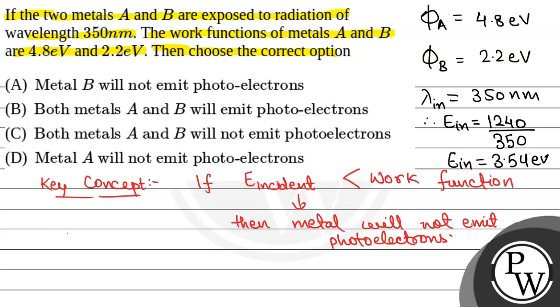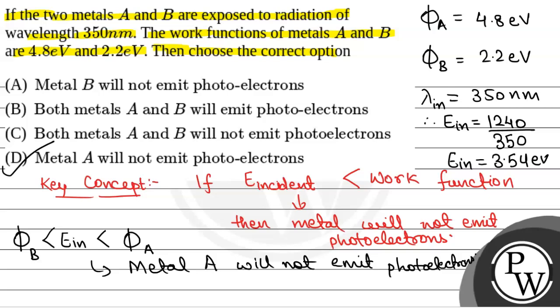Now, we can see that energy incident is less than work function of metal A, but it is greater than work function of metal B. So, metal A will not emit photoelectrons, while metal B will emit photoelectrons. So, the correct option will be option D, metal A will not emit photoelectrons.